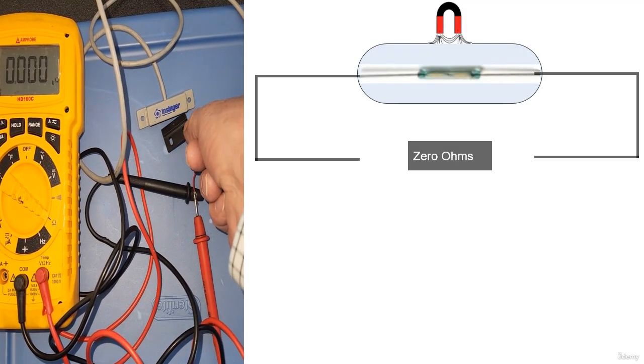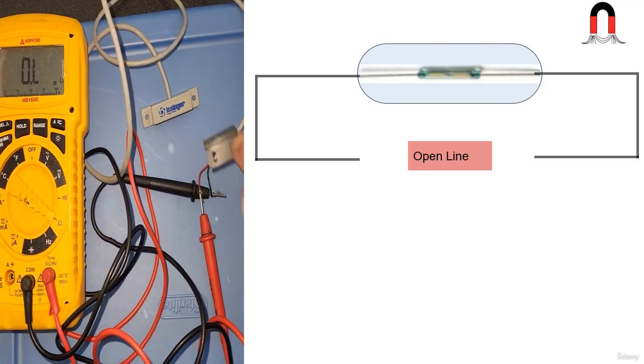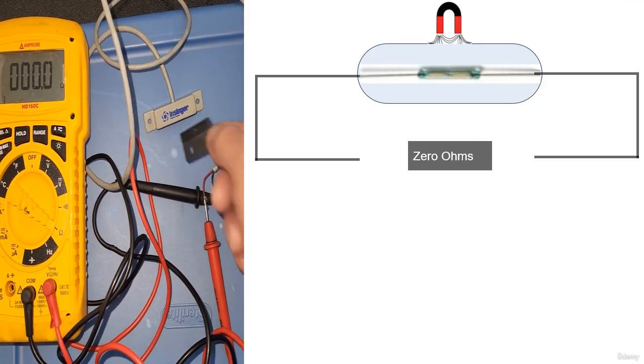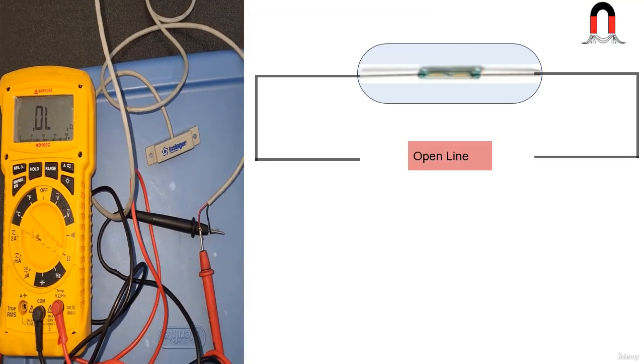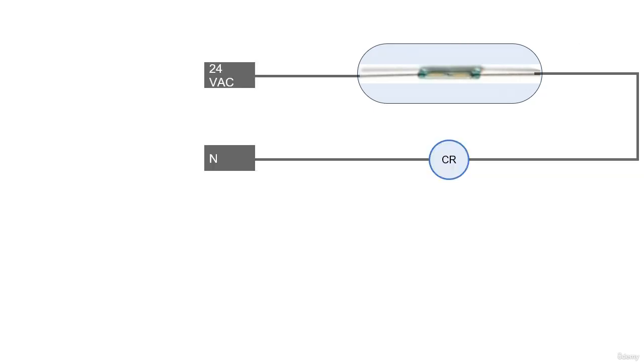Here's how they work. Inside the housing is what's known as a reed switch. When a magnet is placed near the reed, it pulls the switch closed. When the magnet is pulled away, the switch opens. These are typically part of a lower voltage control circuit. I will talk more about control circuits when we talk about transformers.